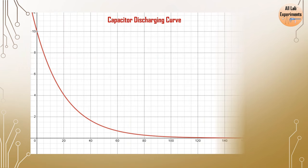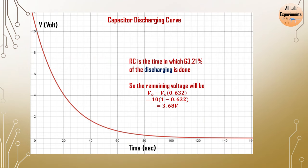By definition RC is the time in which 63.21 percent of discharging is done. We can imagine that out of 10 only 3.68 volt will be remaining. Find the time corresponding to that as well. This is your time constant observed from charging and discharging curves.